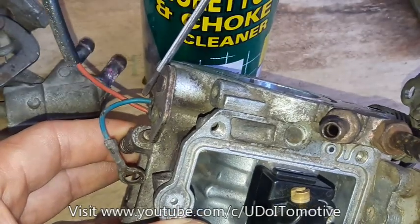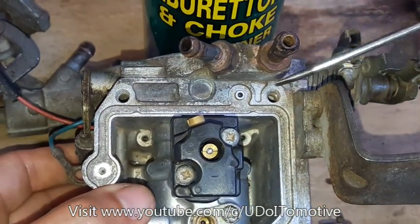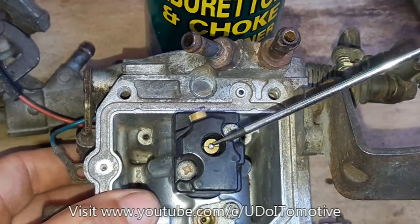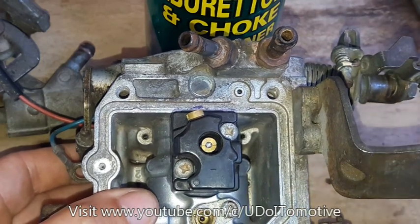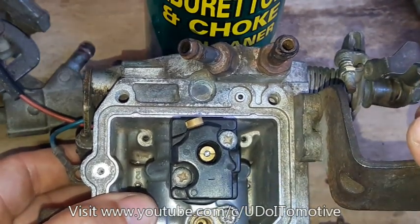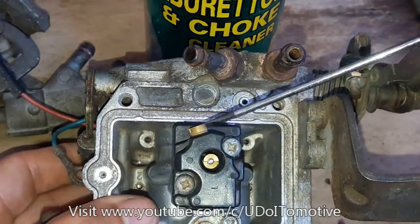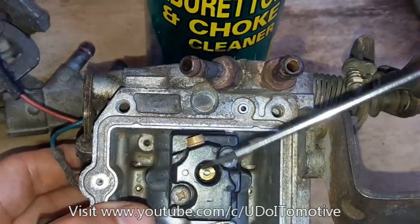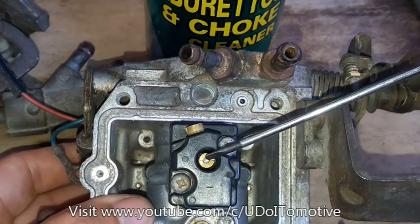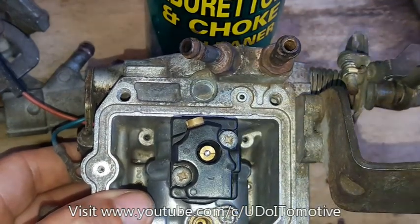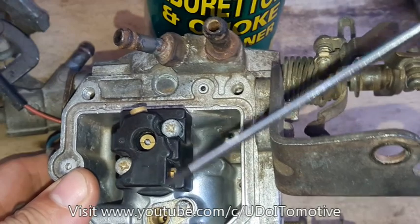Papunta dito sa ating solenoid valve and then, papasok doon sa ating idle mixture screw. Ngayon, ito naman, yung secondary jet — tinatawag nila itong pilot jet. Ito naman yung kapag yung engine mo is running na from idle to a slow speed into a medium speed. Dalawa na yung nagtatrabaho, nagsusupply ng gasolina. Kapag nasa medium speed ka na to a higher speed, ito na ang gumagana — main jet. Tatlo na: isa, dalawa, tatlo.